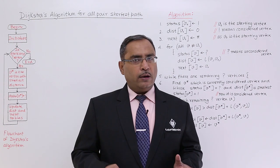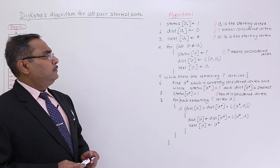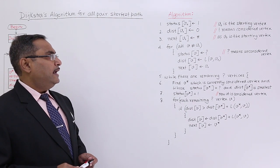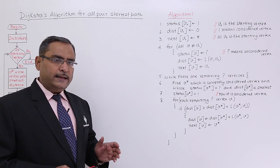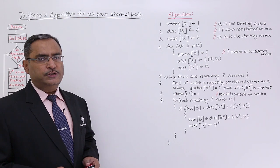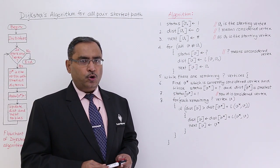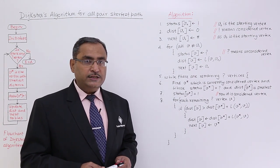So let me go to the algorithm at first. Here we are having three one-dimensional arrays: status, dist, and next. All these arrays are one-dimensional and they are having the size which is equal to the number of nodes in the graph. That means depending upon the number of nodes in the graph, this particular array will have their dimensions.